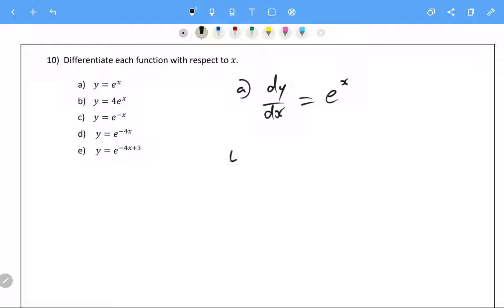Alrighty b. Now by the same rules that we used last time, constants out the front get to stay. So dy dx of b, the four hangs out the front, and e to the x comes along with. Because what's the derivative of e to the x? It's e to the x.